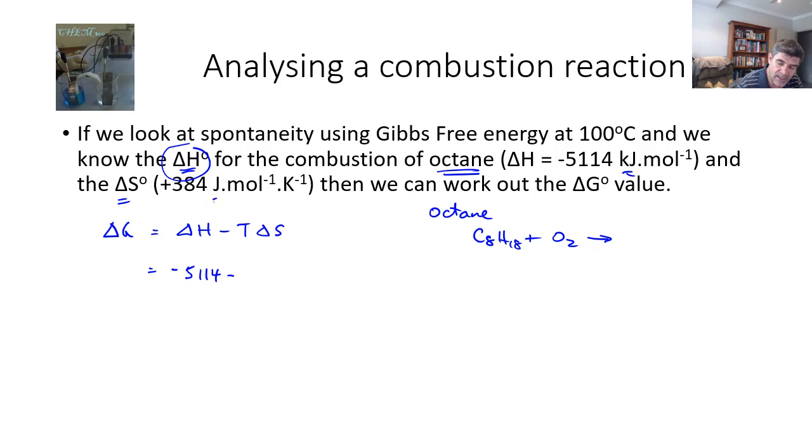I'm just going to put these values in, so minus 5114 kilojoules. Remember, when we're doing our calculations, we need to make sure that we double check the units, kilojoules. Minus T, T is 100 degrees, which I need to convert into Kelvin, 373 times, and the delta S value is in joules. So in order to keep consistent, change it to kilojoules, it becomes 0.384.